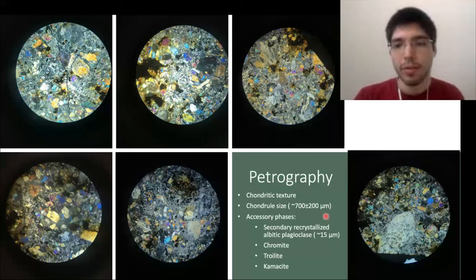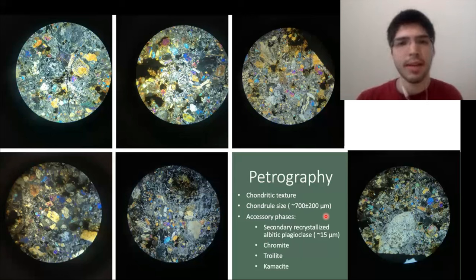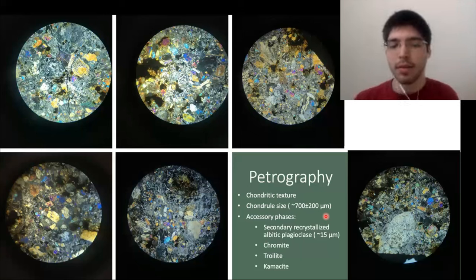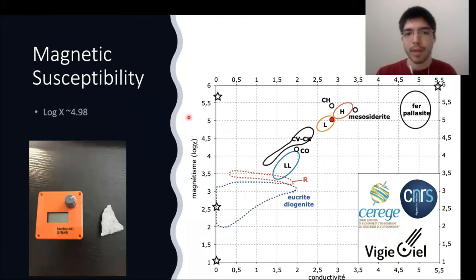That covers the petrography. At this point it looks to be an equilibrated chondrite, and most likely an ordinary chondrite, because we don't see calcium-aluminum-rich inclusions, we do see metal sulfides and chondral matrix, and the chondral sizes are relatively consistent with ordinary chondrites. So what kind of ordinary chondrite is it?